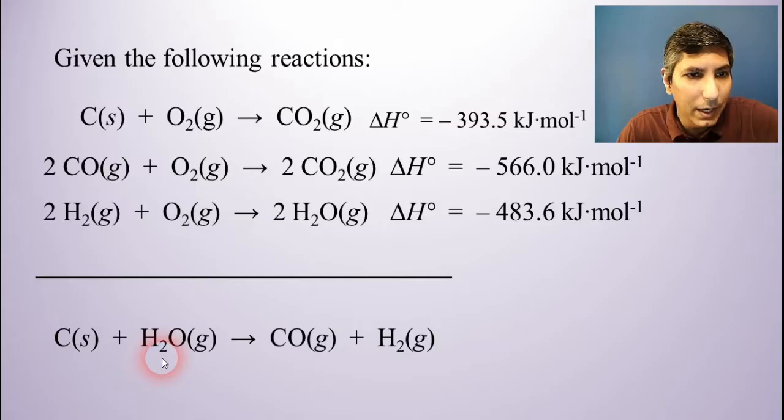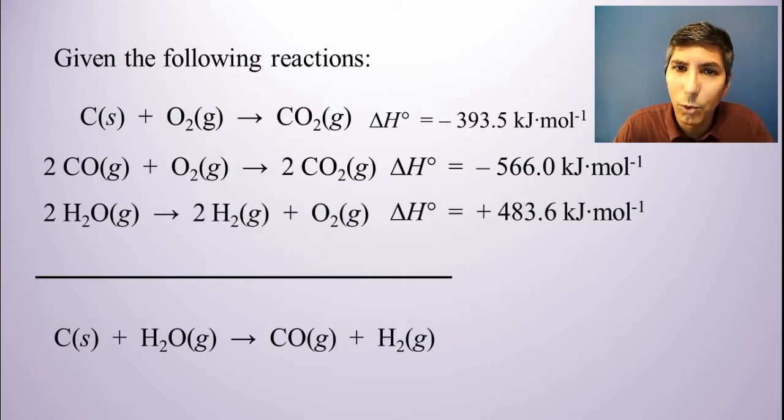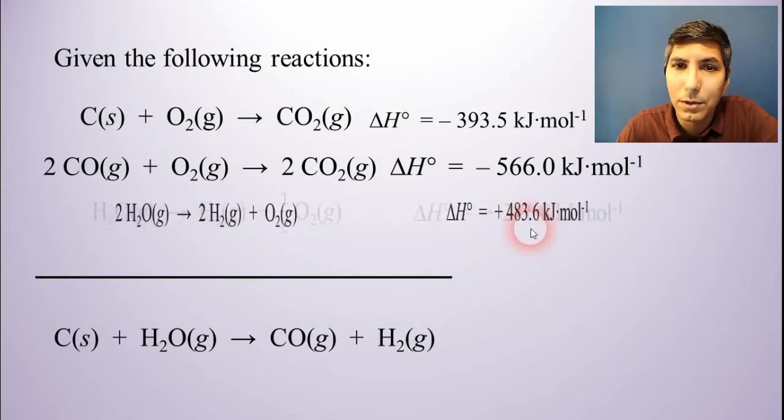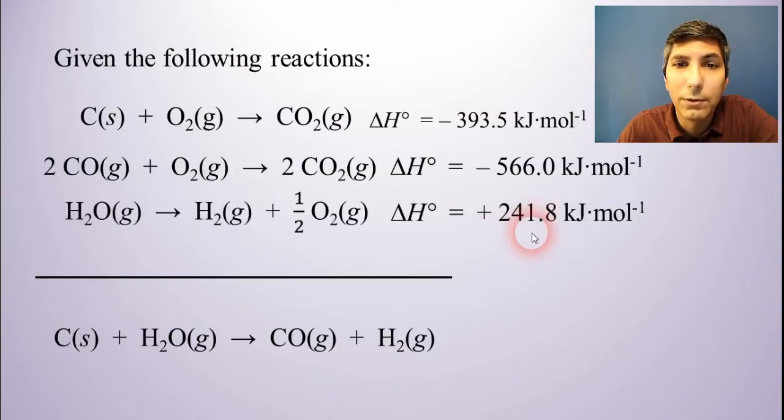Let's take a look at water. Water needs to be on the left side. It needs to have a coefficient of one. And if I look for water up top here, I see water in equation number three, but it's on the wrong side of the arrow. So I'm going to have to flip equation number three. So when I flip it, it changes the sign. So I flip it, it's going to be a positive 483.6. Well, now I also noticed that water has the wrong coefficient. It needs to have a coefficient of one, but it has a coefficient of two up top here. So I need to divide all these coefficients in half. So I'm going to have a one, a one, and I guess a one half in front of the oxygen. That's going to mean my delta H gets cut in half as well. So when I do that, it's going to be a positive 241.8 kilojoules per mole.